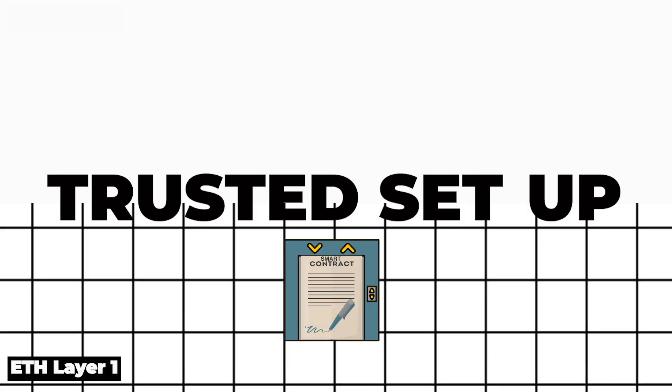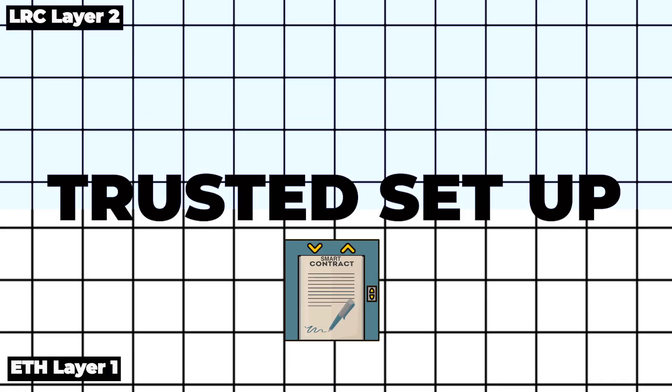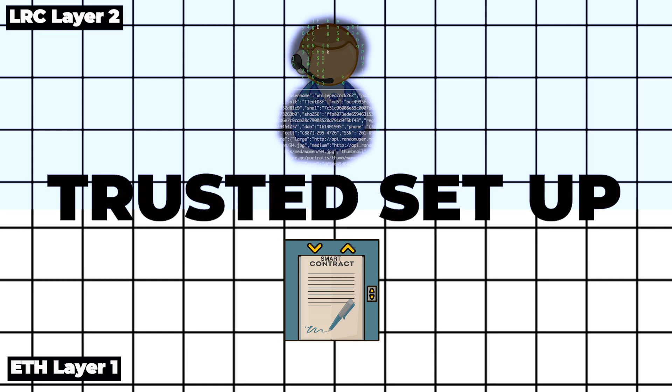The second one is an issue of a trusted setup between the smart contract on layer 1 and the operator on layer 2. It's a set of public parameters. Think of it as the rules of a game. So the first setup of a ZK rollup protocol is a centralized process.